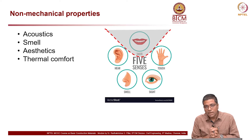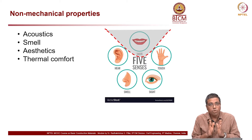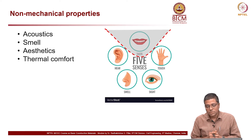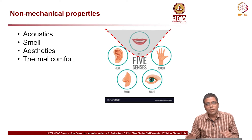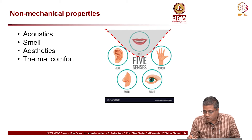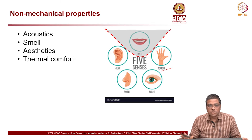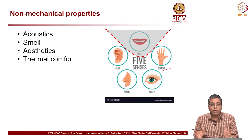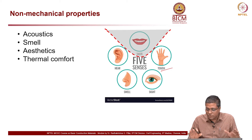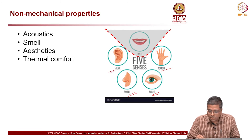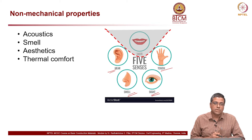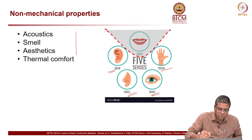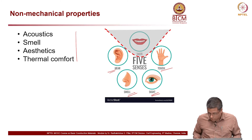Usually we talk a lot about mechanical properties while designing structural systems, but there are also some non-mechanical properties which are very important. They are all associated with the five senses — touch, feel, sight, smell. Today I am going to cover four aspects: acoustics, smell, aesthetics, and thermal comfort.